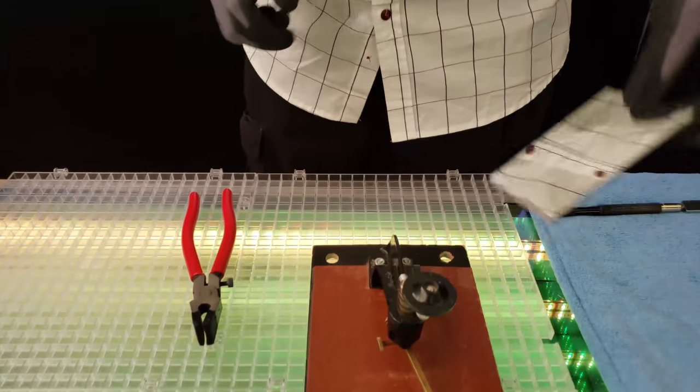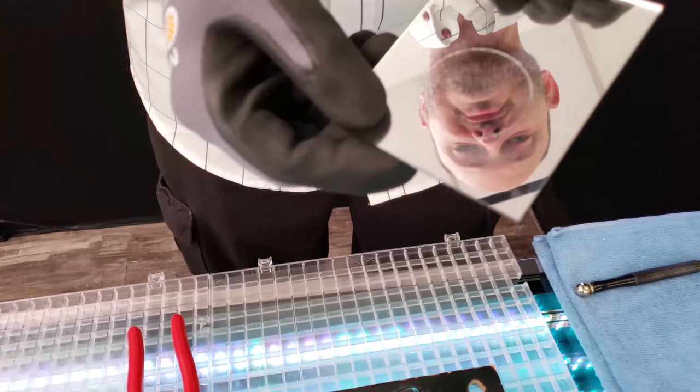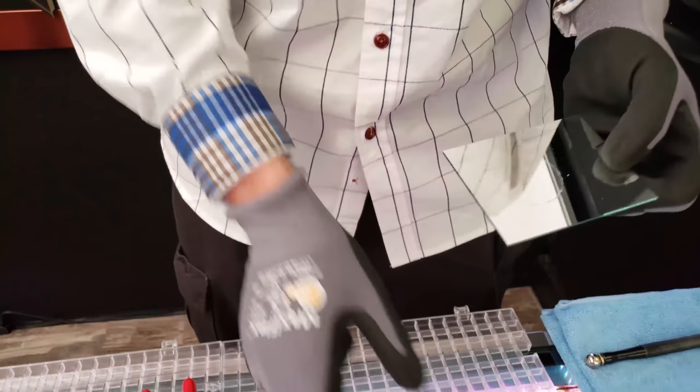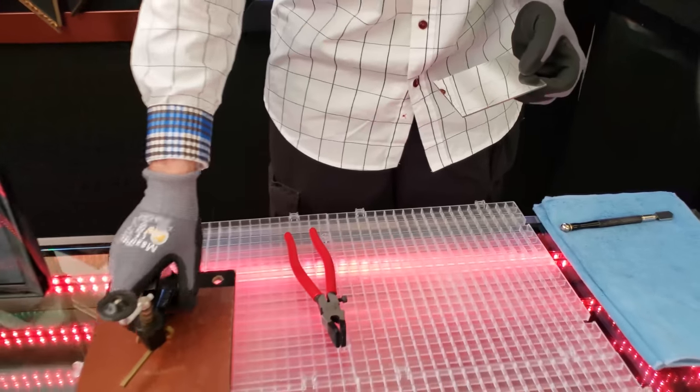If the glass has been scored, you should see that score line from the other side. You can set that tool aside.